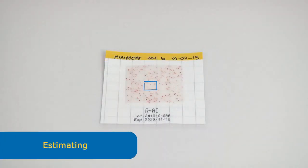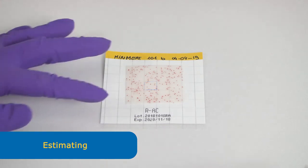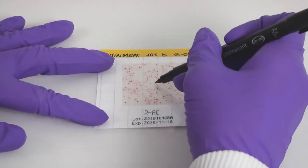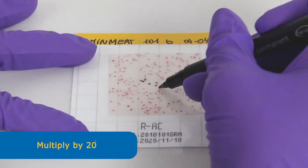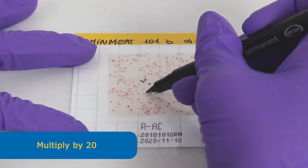If the large number of colonies makes it difficult to count, colony counts can be estimated by counting colonies in one grid square and multiplying by 20.